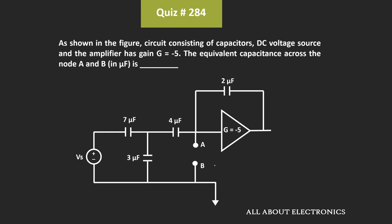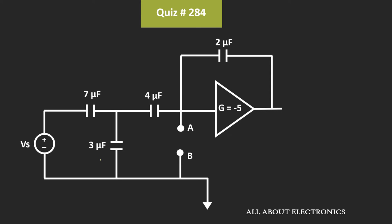To find the equivalent capacitance, first of all let us consider all the independent sources in the circuit as zero. That means we will consider this voltage source as zero. So once we short this voltage source, then the 7uF capacitor and 3uF capacitor will come in parallel. That means their equivalent capacitance can be given as 7uF plus 3uF, which is equal to 10uF.